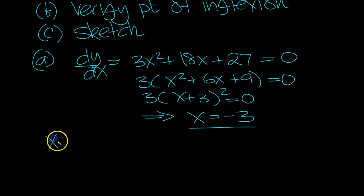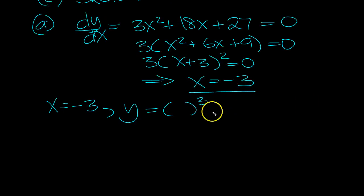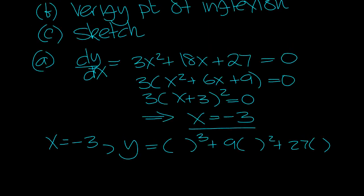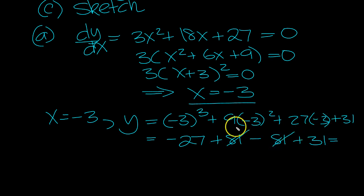When x is -3, y equals x³ + 9x² + 27x... what was the last point? Plus 31. When x is -3, you get -27 + 81 - 81 + 31, so you get 4. So the stationary point is at (-3, 4).